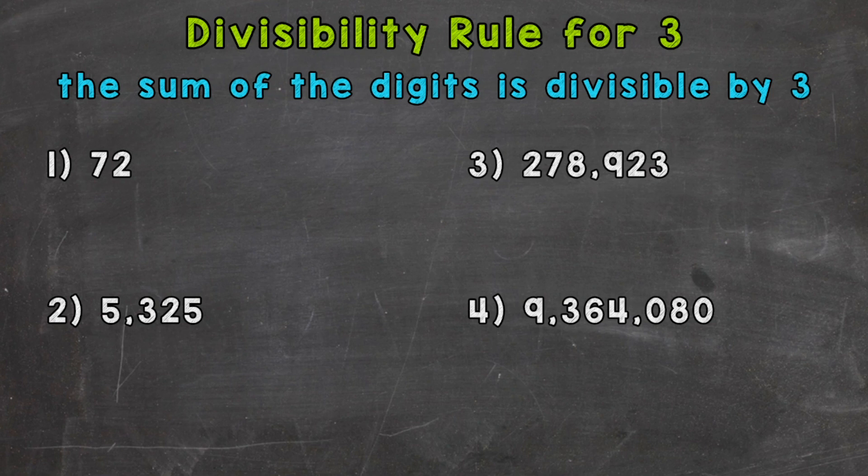We have 4 numbers here that we're going to see if they are divisible by 3 based on the rule at the top of the screen. So what we need to do, we need to find the sum of the digits and see if that sum is divisible by 3. If so, the number is divisible by 3.